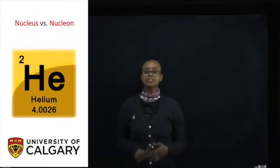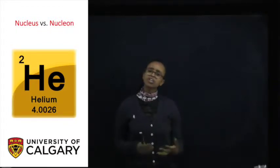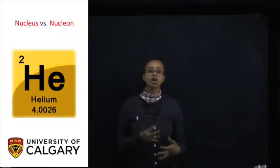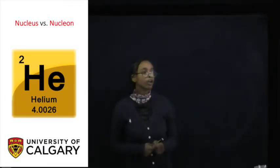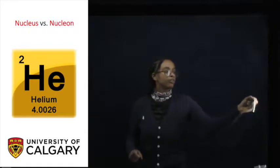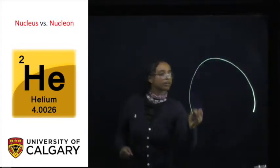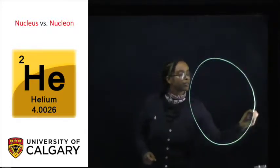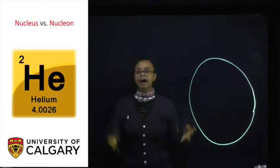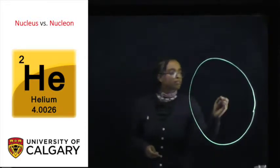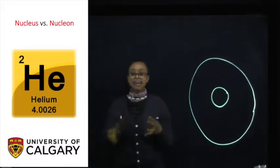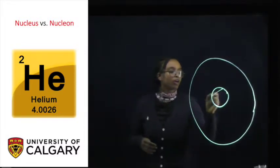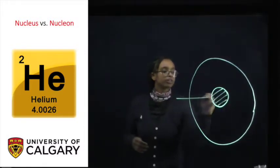In this video, we'll be discussing the structure of an atom. Specifically, what are protons and neutrons and electrons, and how do they play into the structure of the atom? So let's suppose this circle that I'm going to draw right here is the entire atom. In this middle part right here is this dense structure that we call the nucleus.